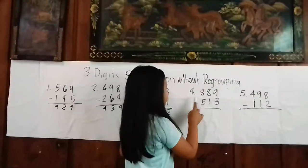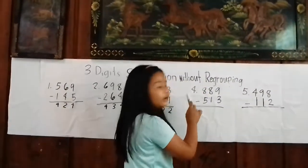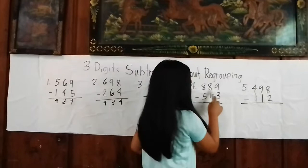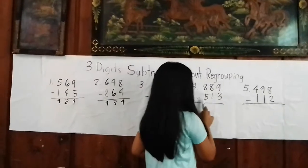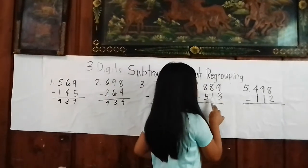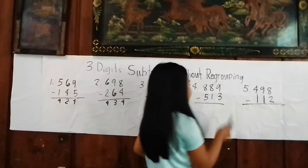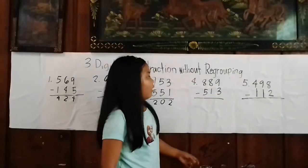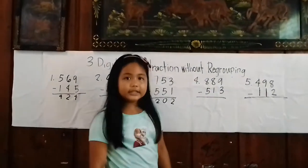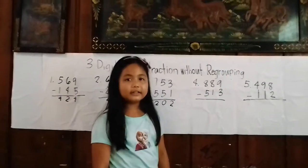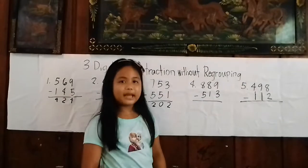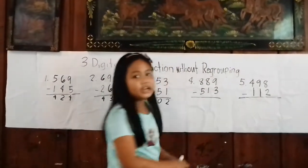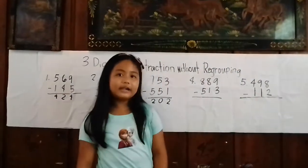Number 4: 889 minus 513. First, we subtract the ones place. 9 minus 3 equals 6.